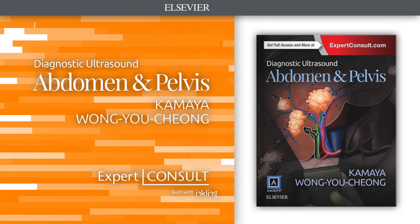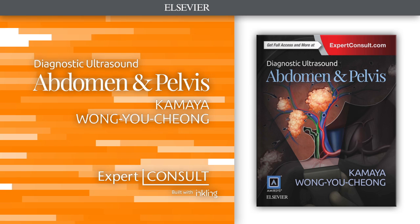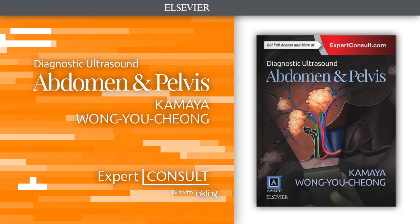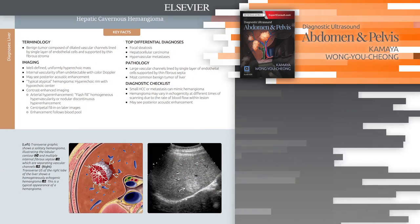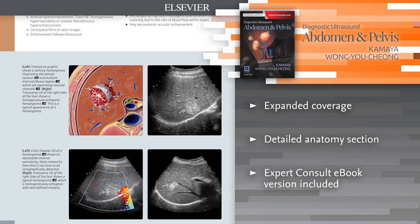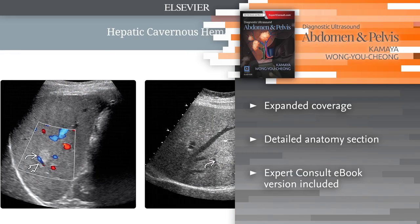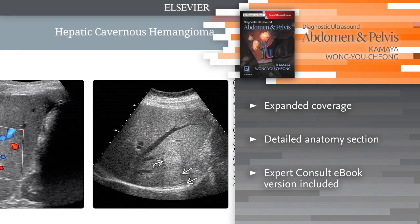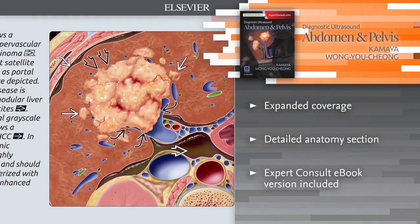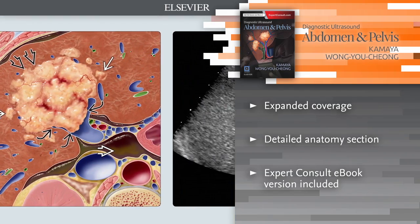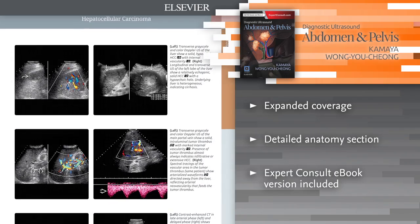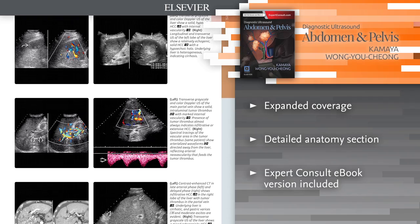Introducing Diagnostic Ultrasound Abdomen and Pelvis. Combining anatomy, diagnosis and differential diagnosis information specific to the abdomen and pelvis, it presents multiple vantage points to ensure clarity and full comprehension of each topic. This image-rich resource provides examples and insight into the full spectrum of imaging appearances observed in various entities to aid in decision support.